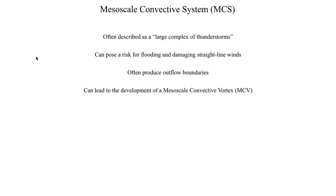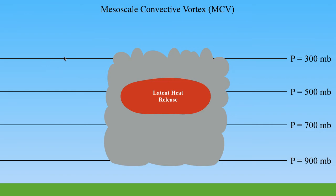What's also important is that a mesoscale convective system can lead to the development of what's referred to as a mesoscale convective vortex, or MCV. We'll discuss the mechanism behind that. A mesoscale convective system is basically just a large collection of thunderstorms.